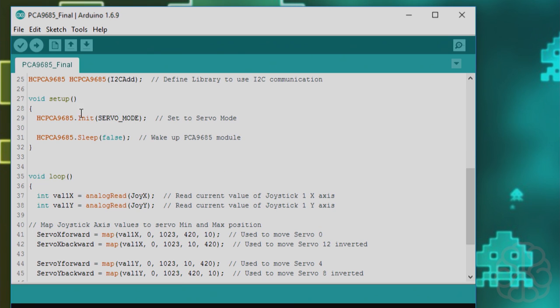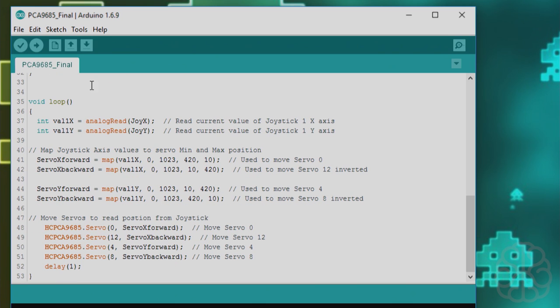In the setup we're initializing the module in servo mode, because you could put it in PWM mode if you want to connect LEDs and control LEDs with this module also. I might do a tutorial on that. Basically it's the same module but using it in a different way to control LEDs, fade in and fade out, stuff like that. Then we wake it up by saying sleep is equal to false, wake up the module, and we got our main loop here.